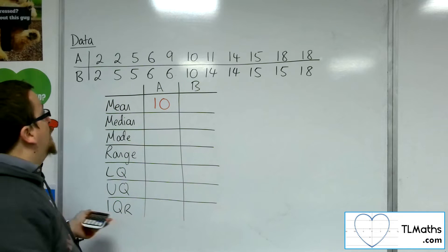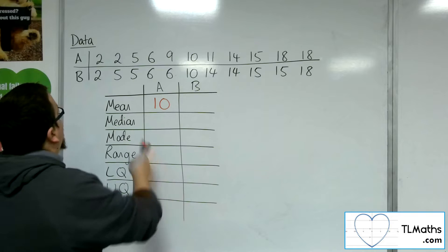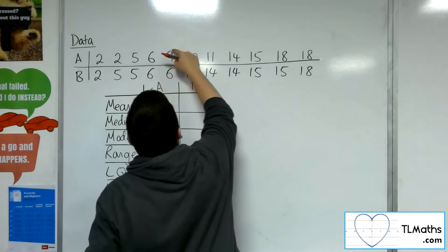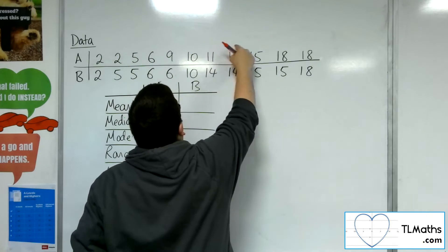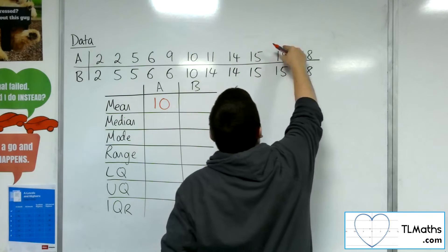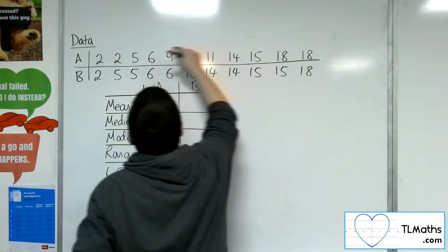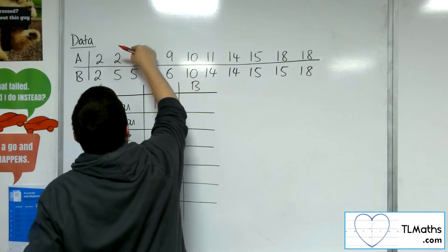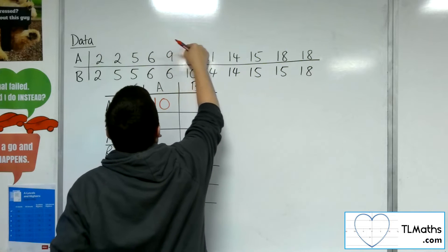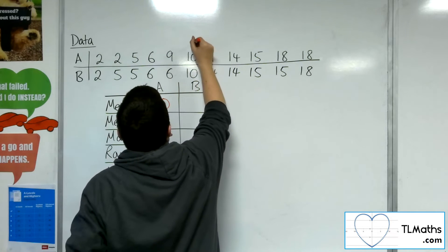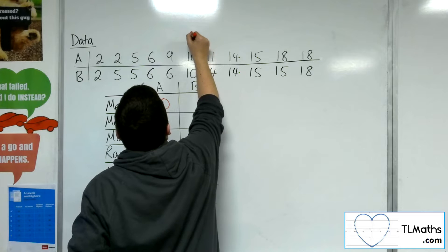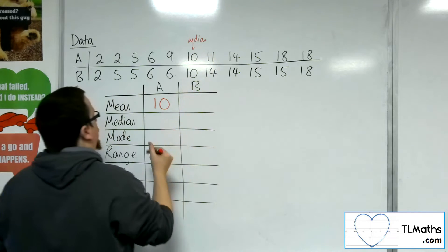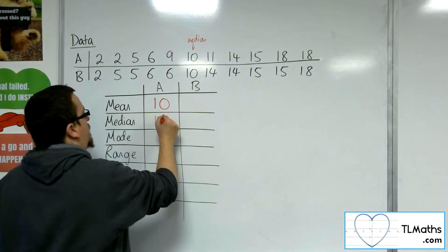The median will be the middle value. We've got 11 bits of data — 1, 2, 3, 4, 5, 6, 7, 8, 9, 10, 11 — so halfway will be the sixth value: 1, 2, 3, 4, 5, 6. So there is your median value, which will also be 10.